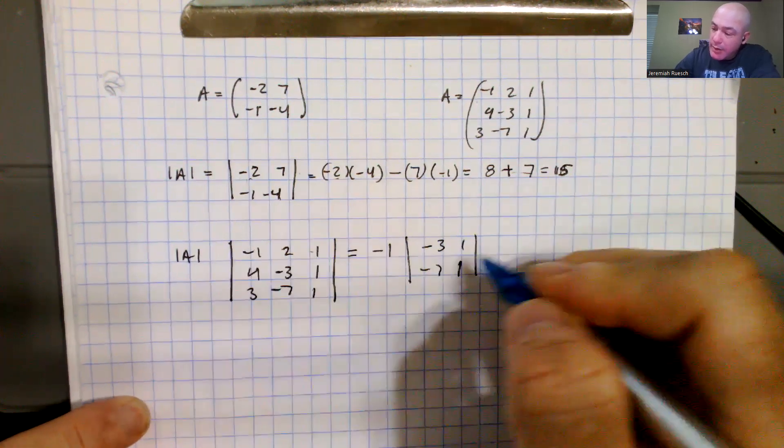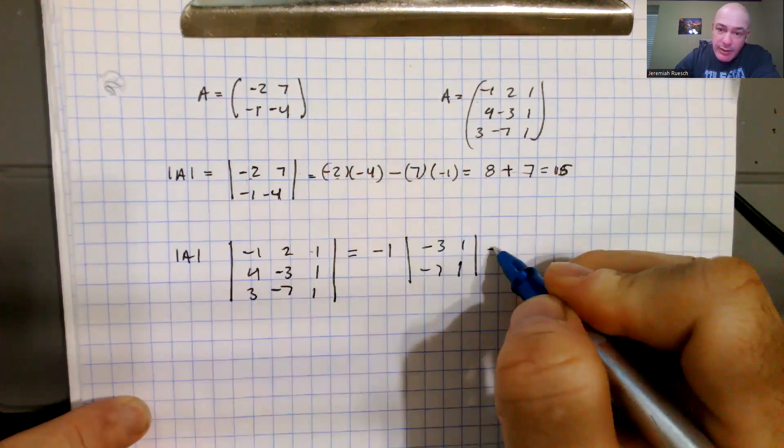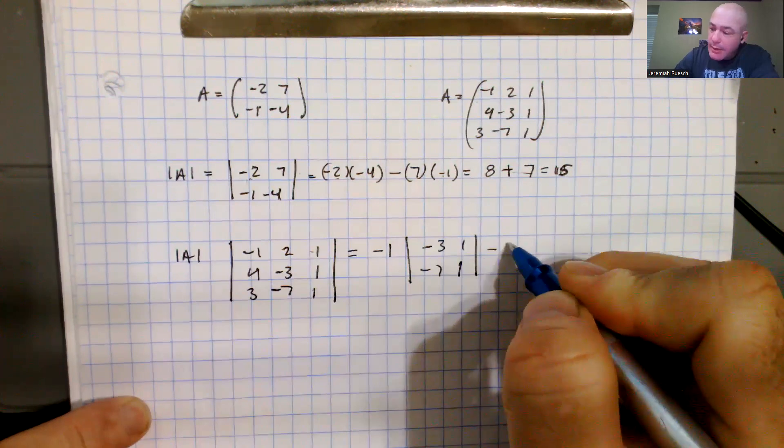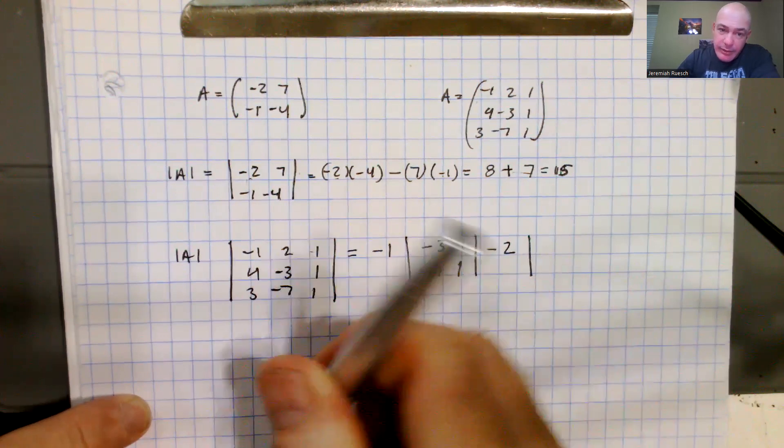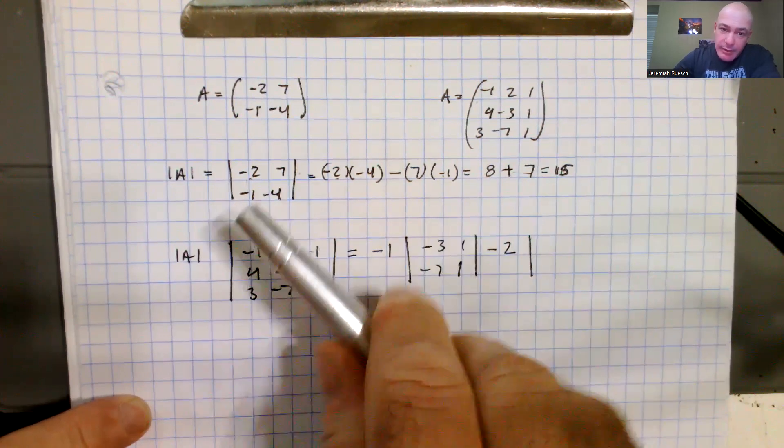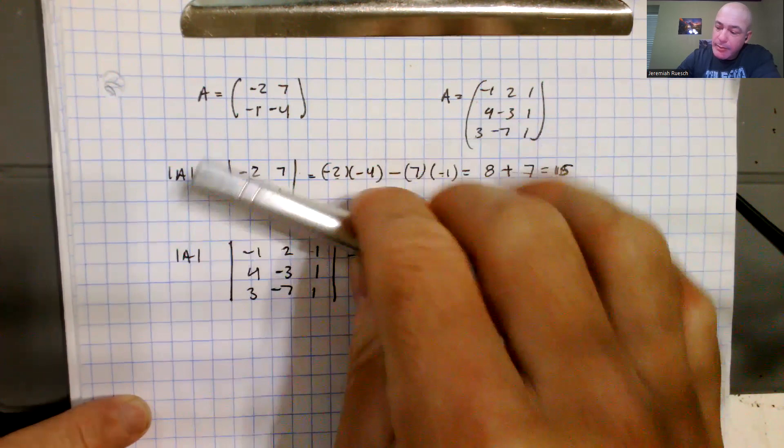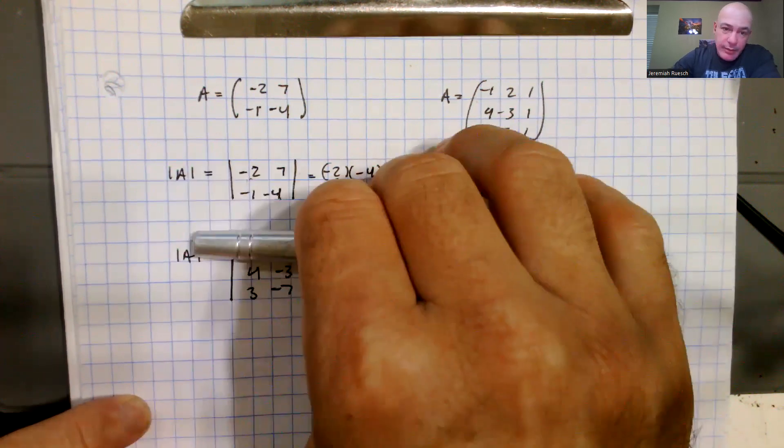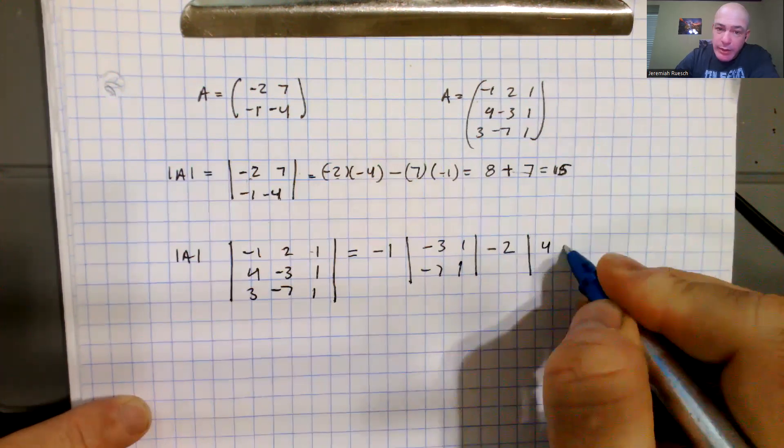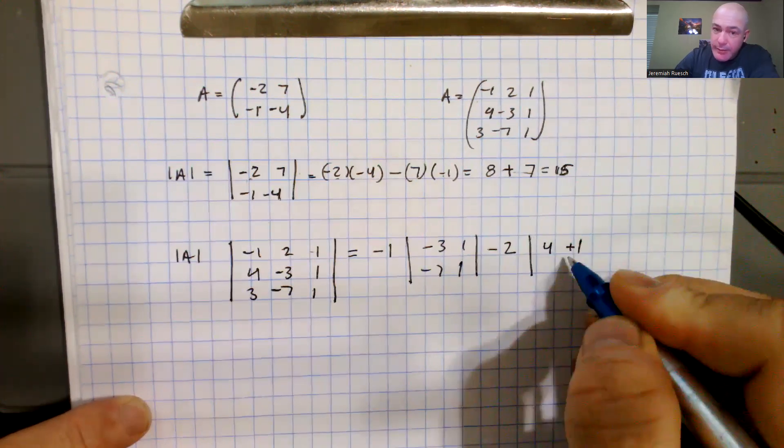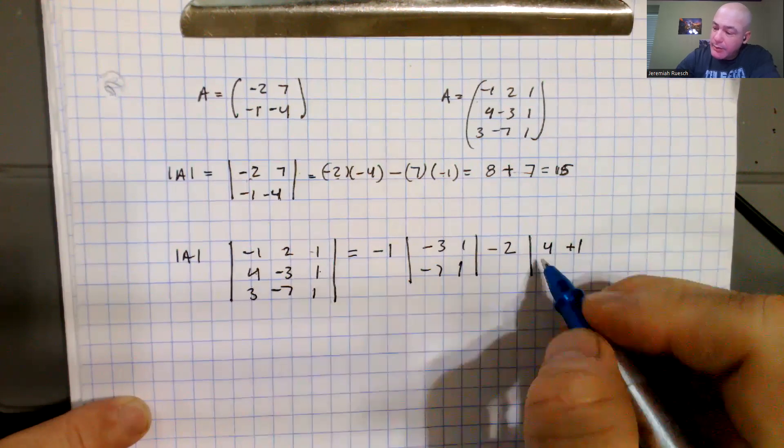Okay, so that's coming from here. And then I'm going to subtract because I'm in the second position. That's going to be minus 2 times the submatrix. So I'm deleting this row and this column. Okay, so you can kind of see that little submatrix there is 4, positive 1, and then 3, and 1.